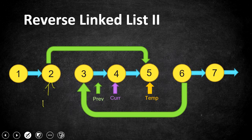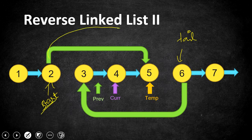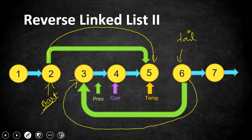We keep a pointer called start at where the reversing process begins, and a pointer called tail where the reversing process ends. We then make a connection between start and the new head of the reversed segment, and a connection between tail and the node after the reversed segment. This gives us the fully reconnected and partially reversed linked list. The overall time complexity is O(n) since we iterate the linked list only once.